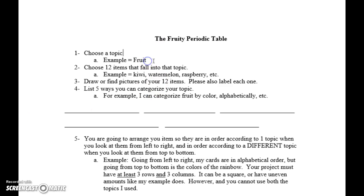So I chose the topic of fruit. Choose 12 items that fall into that topic. So for example, I chose fruit, and so I said kiwi, watermelon, raspberry, etc. So you need to have 12 of them.